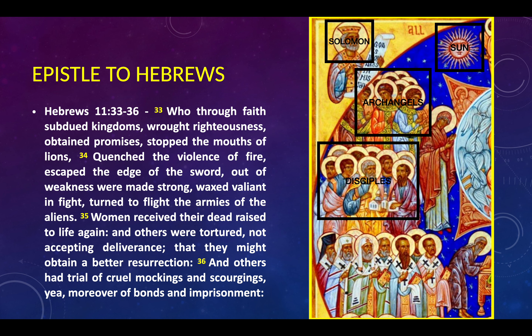We have nine of the disciples there. In the front, wearing that yellow gold garment with the blue undergarment, that's St. Peter with the gray hair. To his right, wearing a red-purple garment with blue underneath and a little bald patch of hair, that's St. Paul. Notice the two of them are holding the church — Peter and Paul were the main apostles of the church. Below them we have the church fathers, in the typical garb of a bishop.